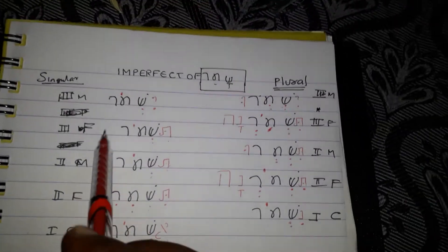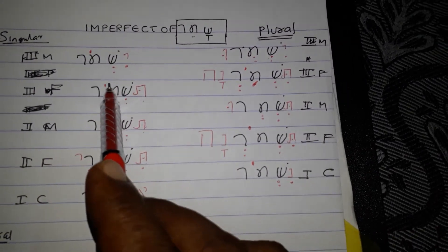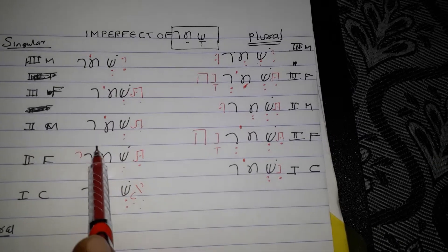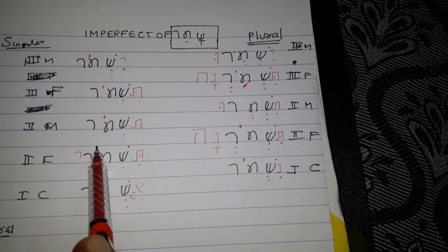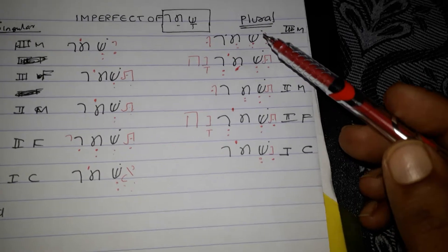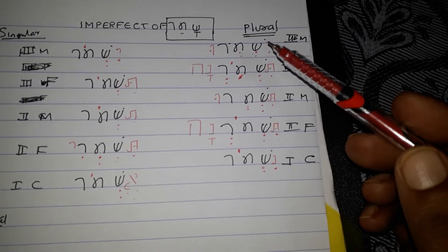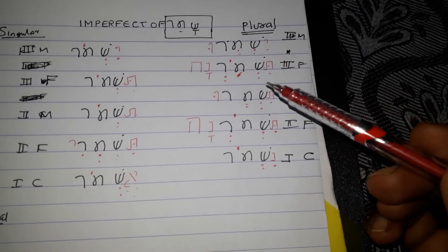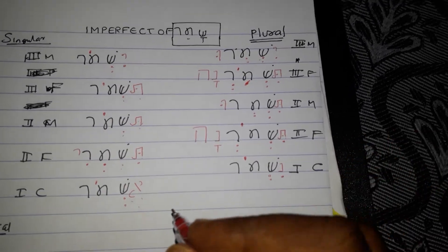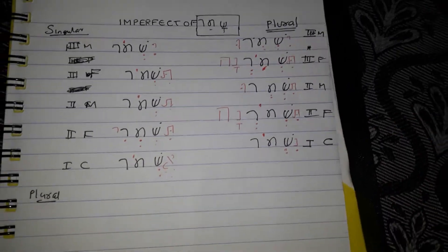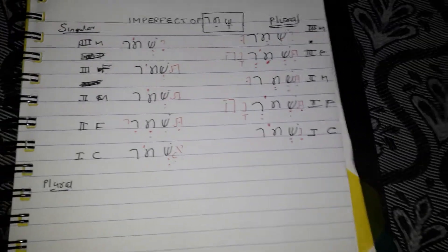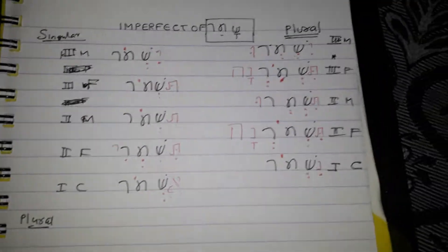The meaning is: he will keep, she will keep, thou will keep, thou will keep, I will keep, and then they will keep, they will keep, you will keep, you will keep, you will keep, we will keep. That is the future — imperfect — you know, imperfect, that is in Hebrew, it is the future.